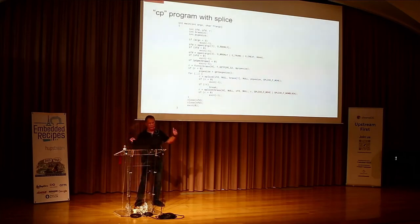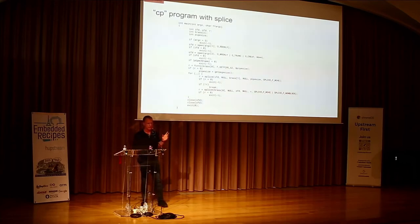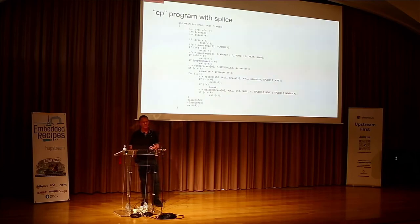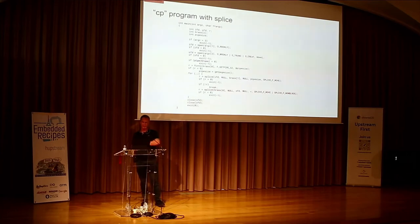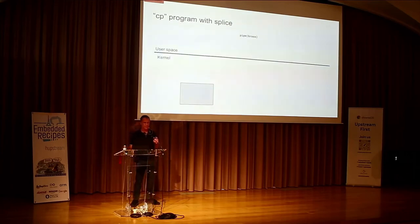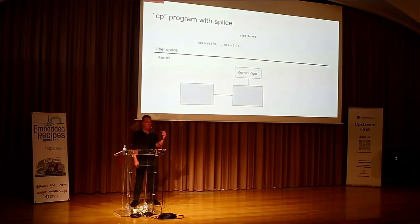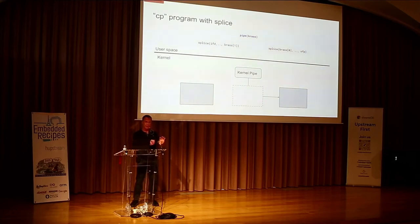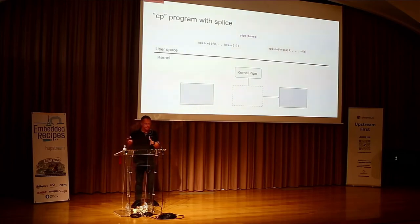Here's a more advanced copy program using the splice system call. First you need a pipe. You take a file descriptor, connect it to a pipe, then take that pipe and connect it to another file descriptor. You create a pipe inside the kernel that it communicates with. You do your splice from one to the copy — it stays right in the kernel, never goes to user space. The second splice can use move, so it's really just one copy.